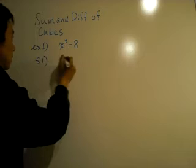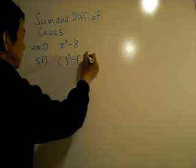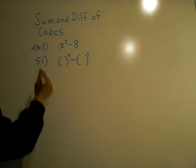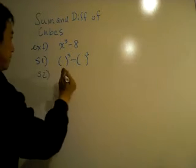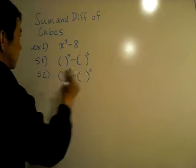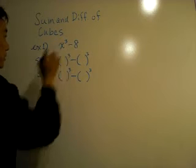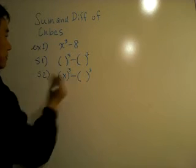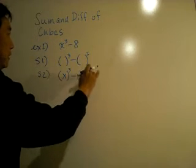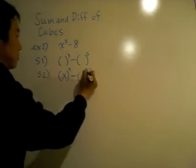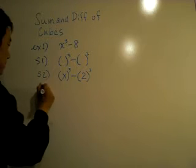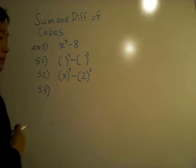Step one is going to be something cubed minus something cubed. Step two, we're going to plug in the information here. Well, what cube would equal x cubed? That would be obviously x. And then what about eight? What cubed would equal eight? Two times two times two is eight, so there it is.